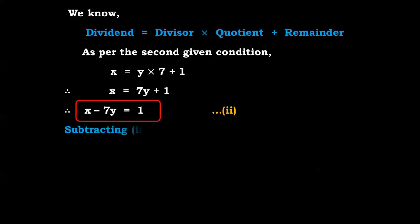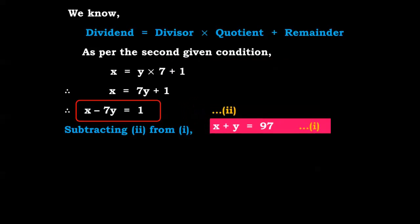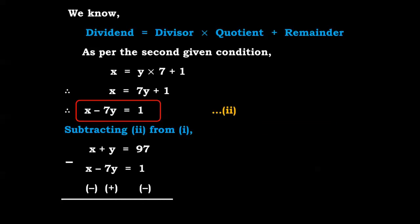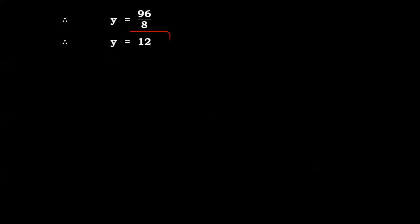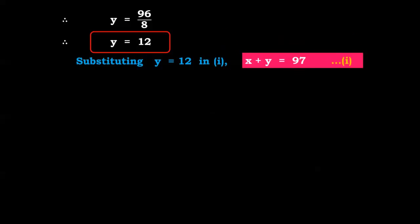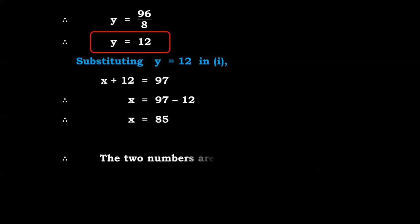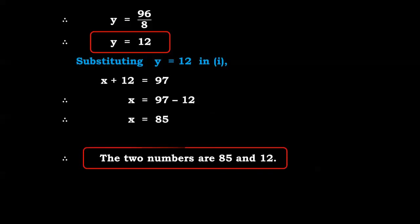Now we can solve equations 1 and 2. Subtracting equation 2 from equation 1: x + y = 97 minus x - 7y = 1. So x - x cancels, y + 7y = 8y = 96, therefore y = 12. Substituting y = 12 in equation 1: x + 12 = 97, therefore x = 85. The two numbers are 85 and 12.